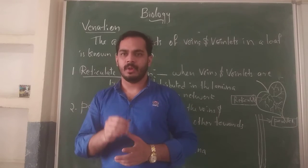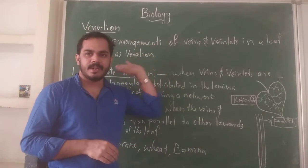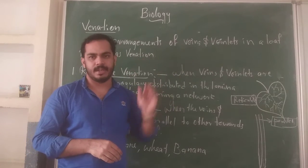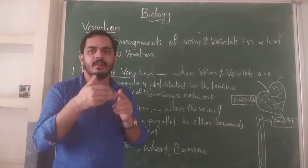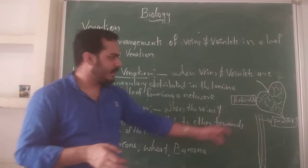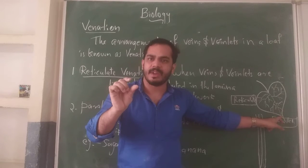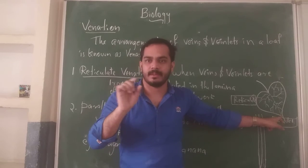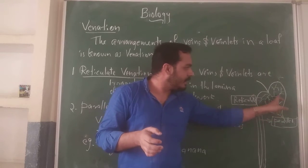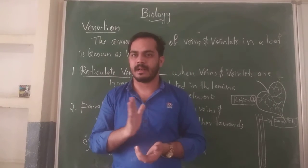So what is meant by Venation? Venation is very simple — the arrangement of veins and veinlets in a leaf is called Venation. Here is a leaf. The center line is called the main vein. The smaller branching lines are called veinlets. So this arrangement of veins and veinlets is called Venation.